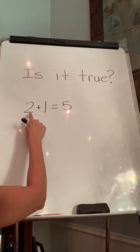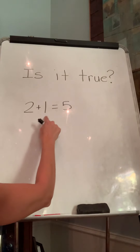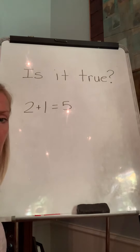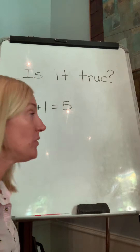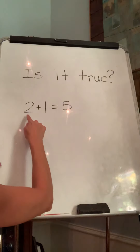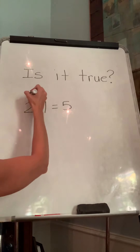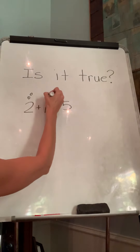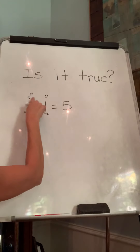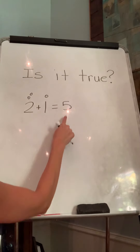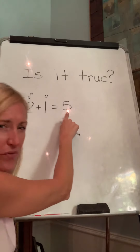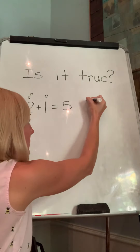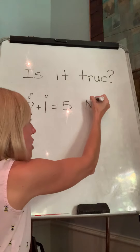So I put two plus one equals five. Is that true? Well, two — if you need to draw it, you can go like this. And here's one, two, three. Does it equal five? No. So I'm going to write no.